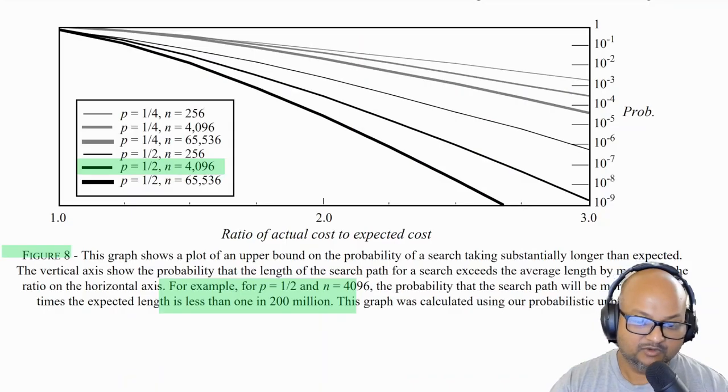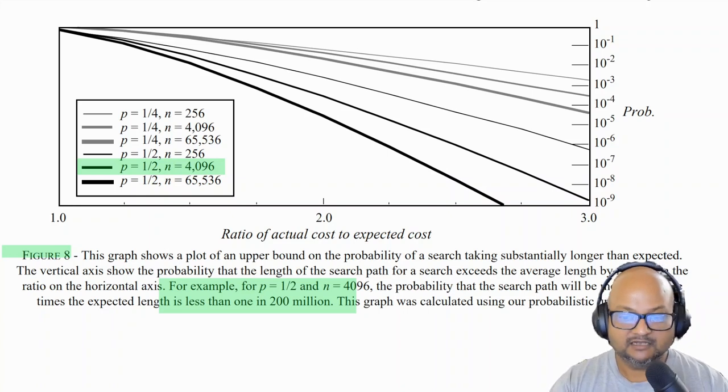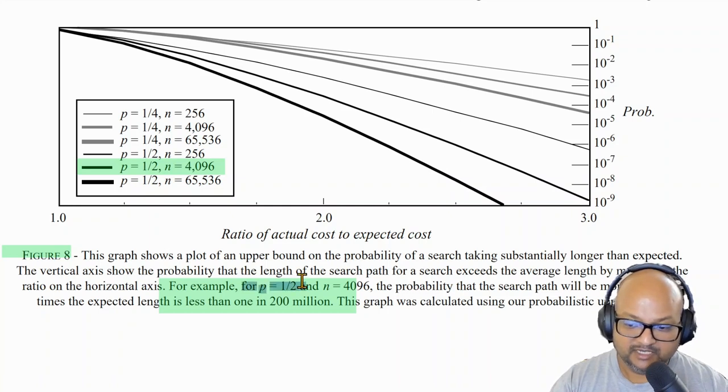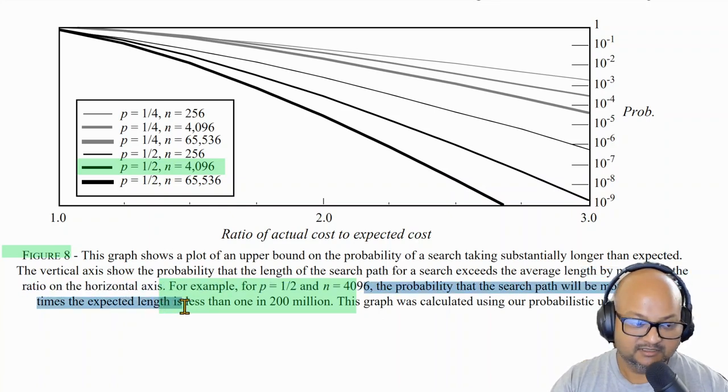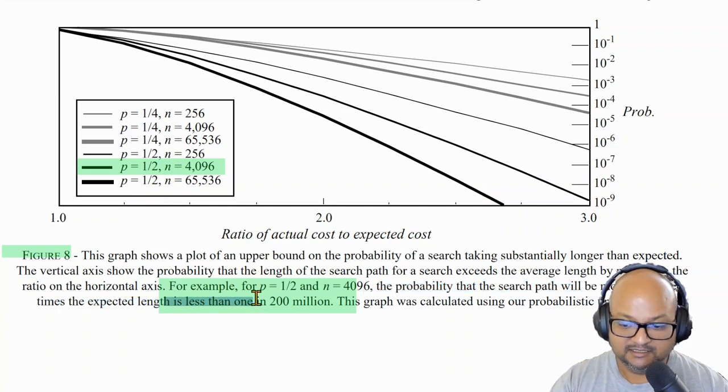Now you might ask what if the data structure sees some pathological input? What could the worst case performance be like? And since this is a probabilistic data structure we can do some analysis. And what the author found was that for p equals half and a data structure containing 4000 elements, the probability that search will be more than three times the expected time complexity—which is log n—is less than one in 200 million. So not significant for all practical purposes.